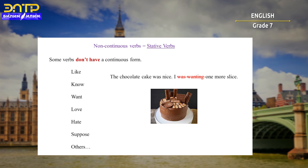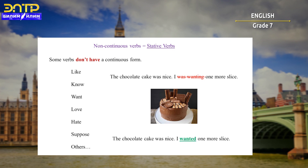For example, the sentence 'The chocolate cake was nice, I was wanting one more slice' is incorrect. We don't say 'I was wanting'. We should say 'I wanted one more slice'. So here we only need past simple with the verb 'want'.